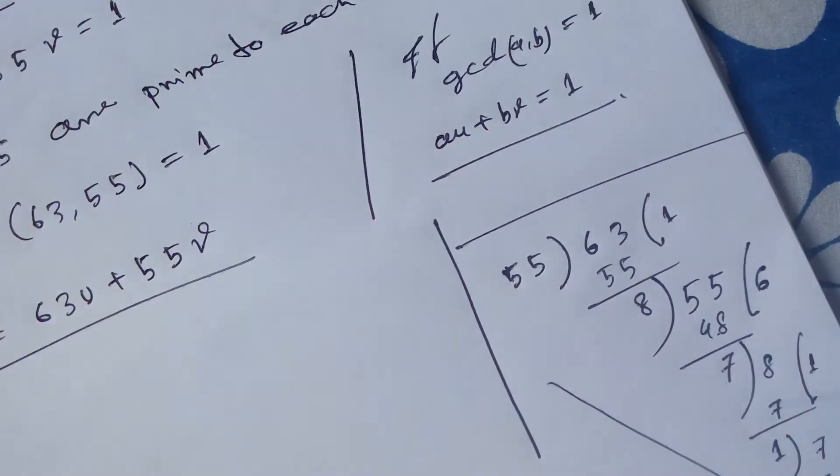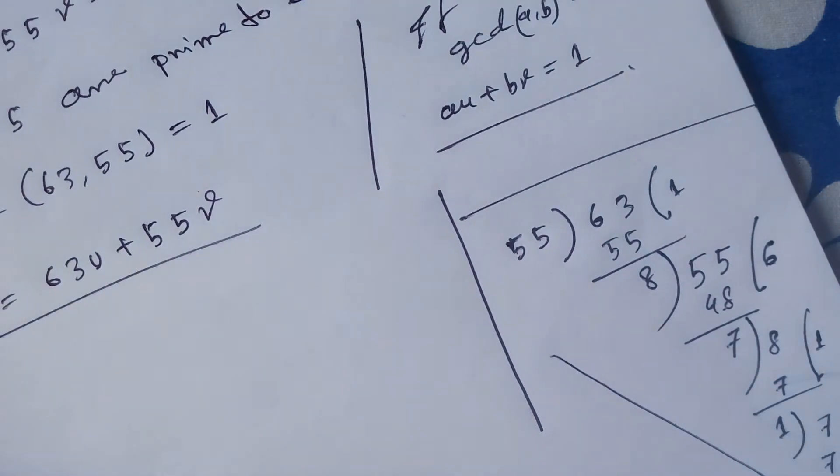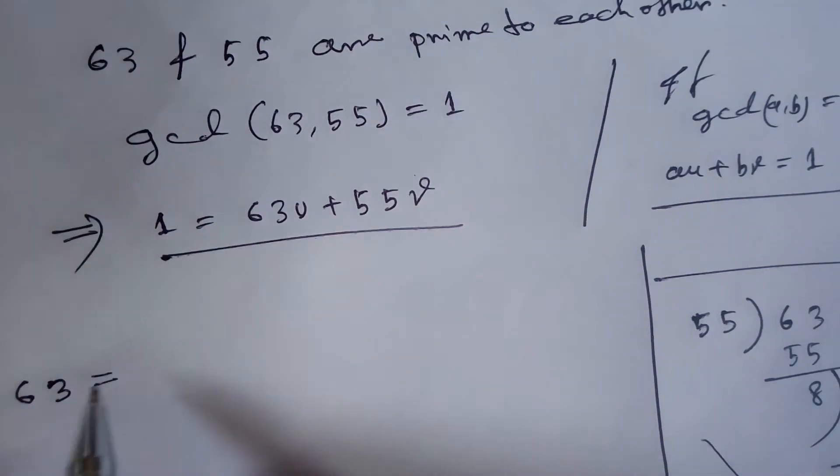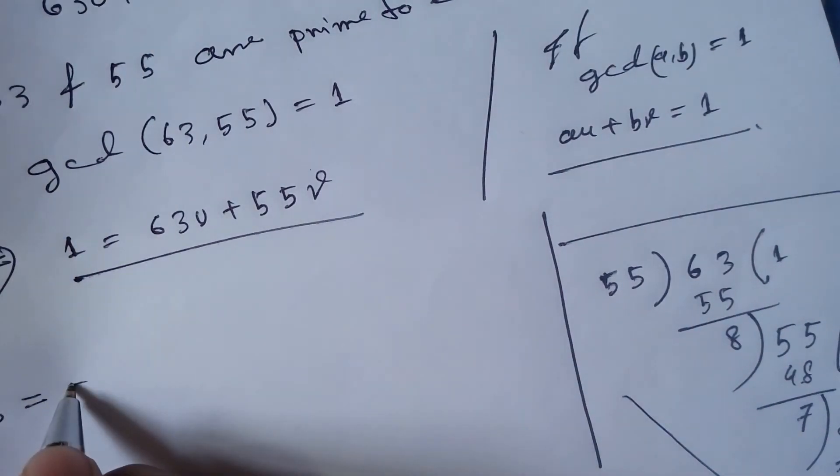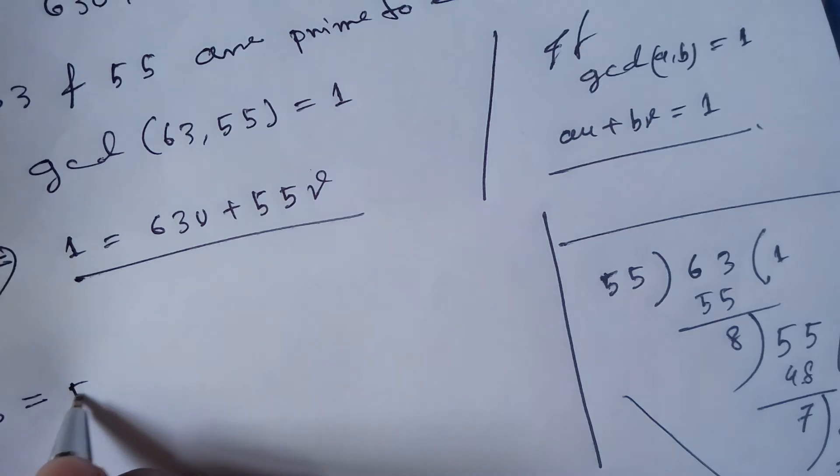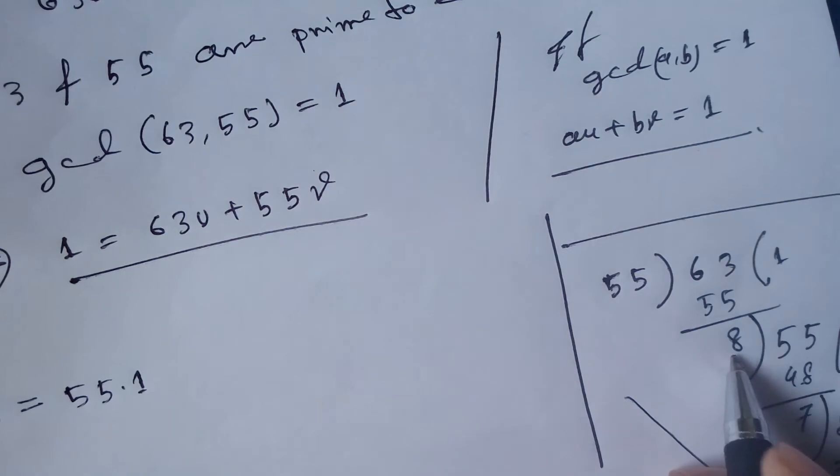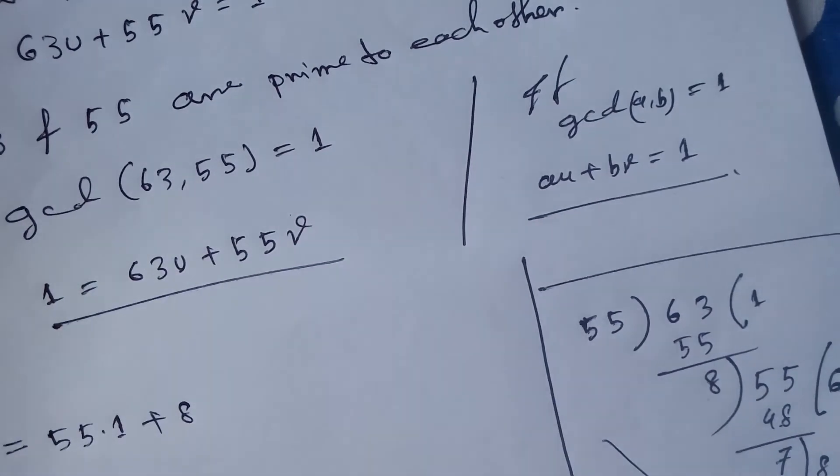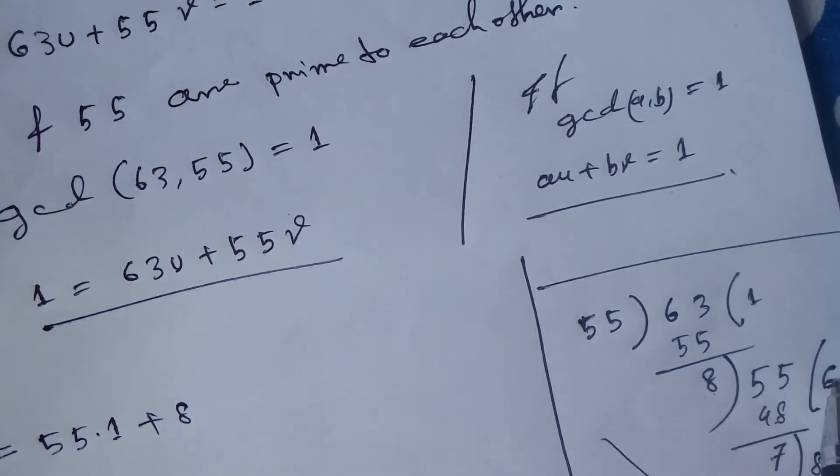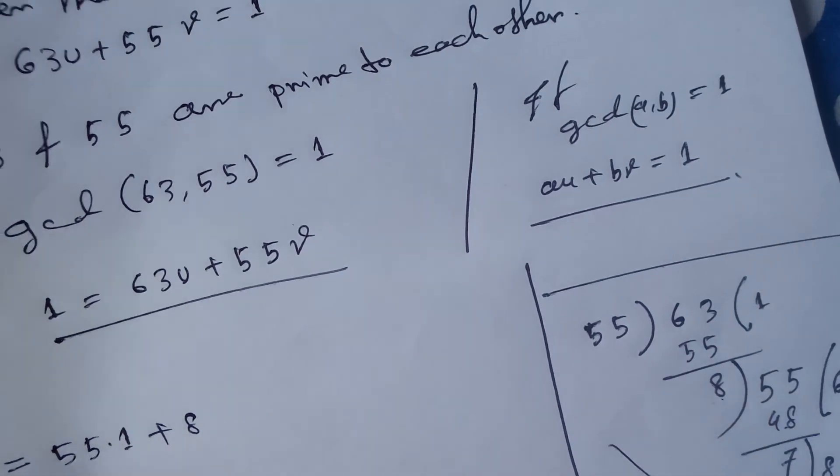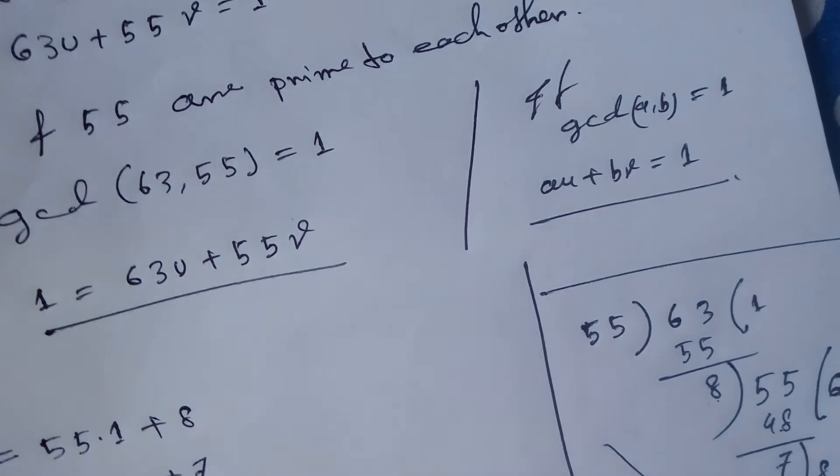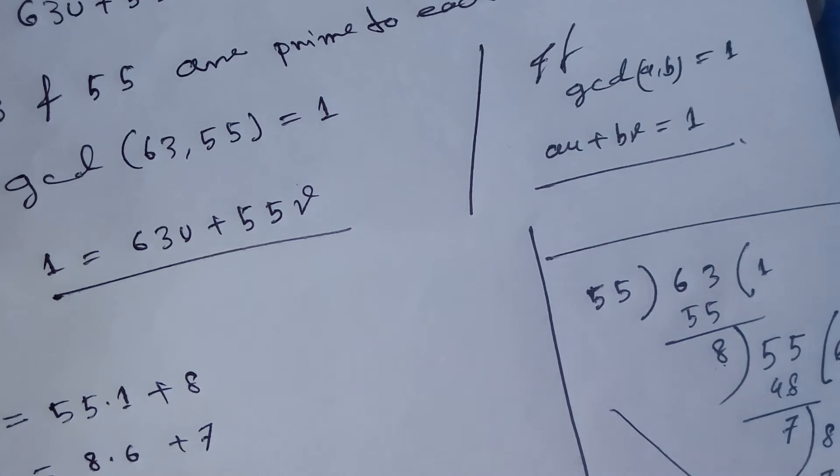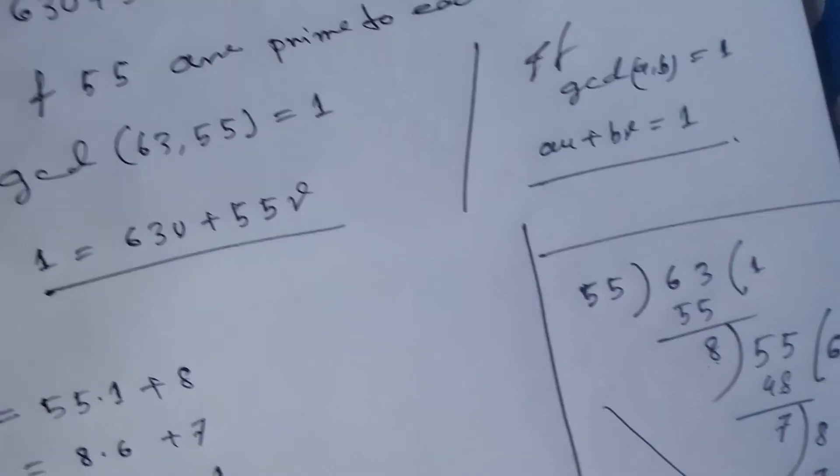Now we can write 63 equals 55 times 1 plus 8. Again, 55 equals 8 times 6 plus 7. Similarly, 8 can be written as 7 times 1 plus 1. This remainder, okay. These equations are numbered 1, 2, 3.